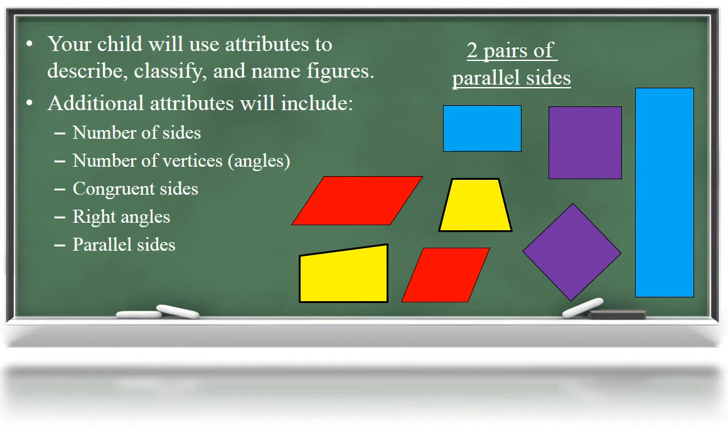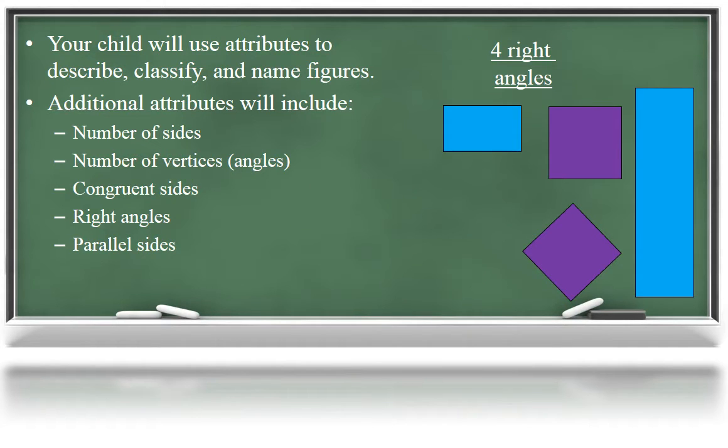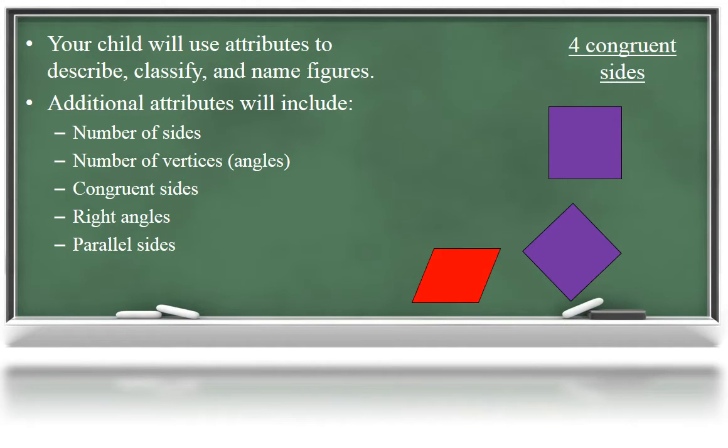For example, quadrilaterals with two pairs of parallel sides are called parallelograms. Quadrilaterals with four right angles are called rectangles. And quadrilaterals with four congruent sides are called rhombuses.